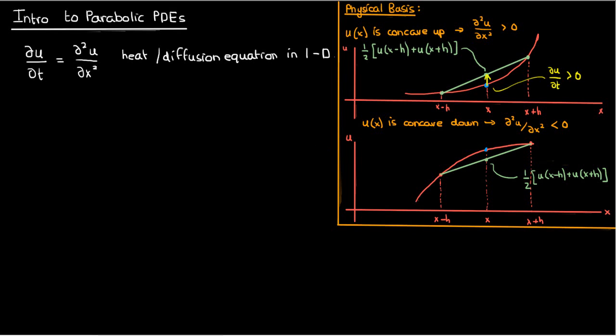In other words, we have a relative hot spot, or a region of relatively high concentration if we're talking in terms of diffusion. Because of this, the temperature or concentration, whatever u represents, it tries to equilibrate with the surroundings by decreasing.